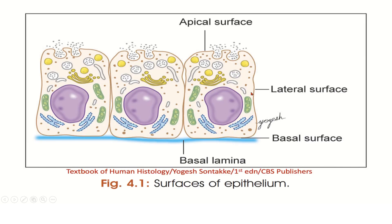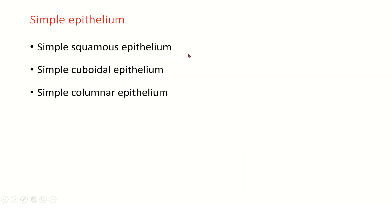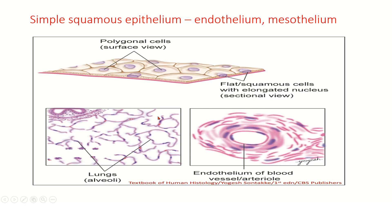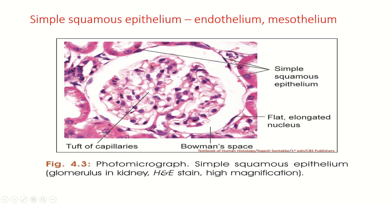You can see here: this is the apical domain, this is the lateral domain, and this is the basal domain. Simple epithelium is classified into simple squamous epithelium, simple cuboidal epithelium, and simple columnar epithelium. Simple squamous epithelium — examples are endothelium and mesothelium. On the section, you can see flat cells with elongated nuclei; from the surface, they appear polygonal. You can see the endothelium of blood vessels and the lung alveoli where there is squamous epithelium. You can also see the Bowman's space and renal capsule lined by simple squamous epithelium.